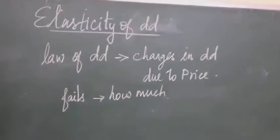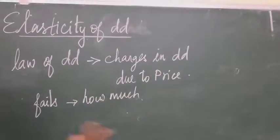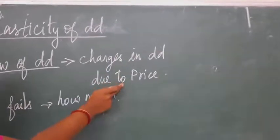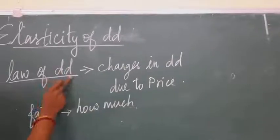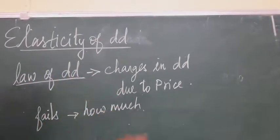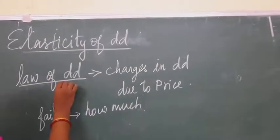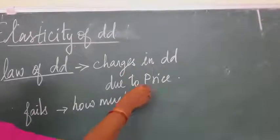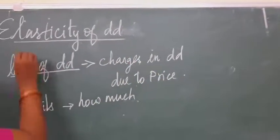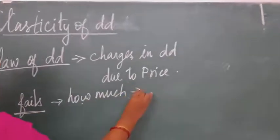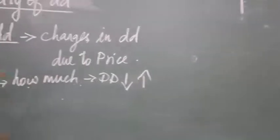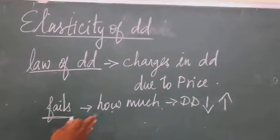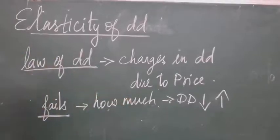The next topic is elasticity of demand. Elasticity means movement. The law of demand tells us about changes in demand due to price — if price increases, demand decreases; if price decreases, demand increases. However, the law of demand fails to explain how much the demand is increasing or decreasing, and at what rate.